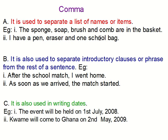So you see: the sponge, there's a comma; soap, a comma; brush and comb are in the basket. In the second sentence: I have a pen, eraser and one school bag. Each of these items are separated by a comma. I hope it is clear.